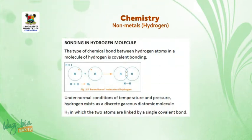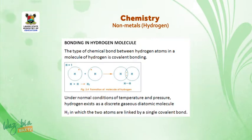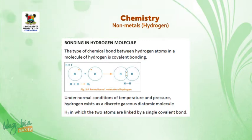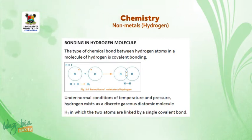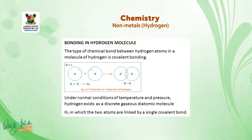Bonding in hydrogen molecule: The type of chemical bond between hydrogen atoms in a molecule of hydrogen is covalent bonding. In this type of bonding, the two hydrogen atoms contribute one electron each to form a shared pair, or a single covalent bond, as represented by a single stroke between the two nuclei. Under normal conditions of temperature and pressure, hydrogen exists as a discrete gaseous diatomic molecule H₂, in which the two atoms are linked by a single covalent bond.